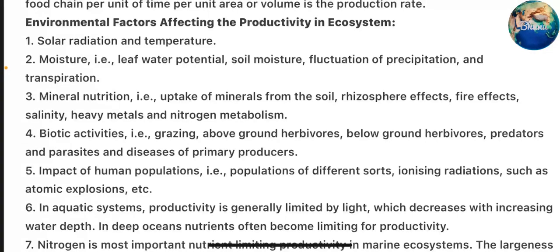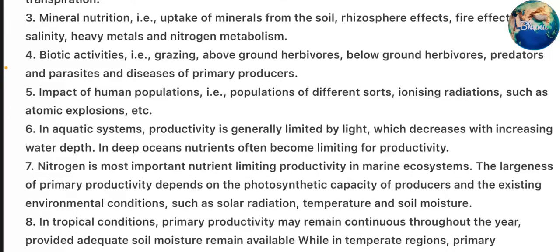Environmental factors affecting productivity in ecosystem: solar radiation and temperature; moisture, i.e., leaf water potential; soil moisture; fluctuation of precipitation and transpiration; mineral nutrition, i.e., uptake of minerals from the soil; rhizosphere effects; fire effects; salinity; heavy metals; nitrogen metabolism; biotic activities, that is grazing above-ground herbivores, below-ground herbivores, radiators and parasites, and diseases of primary producers; and impact of human population, including ionizing radiations such as atomic explosions, etc.